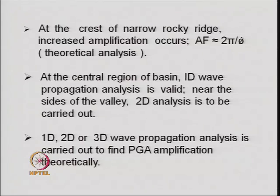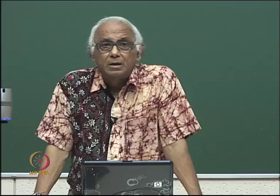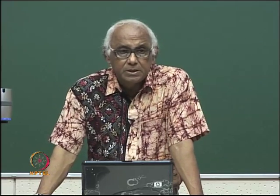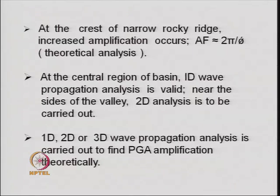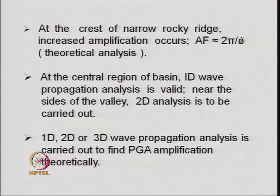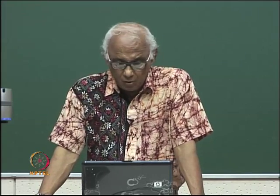At the crest of a narrow rock ridge, increased amplification was observed — of the order of 2π/φ, where φ is the included angle of the ridge. The amplification observations were later verified by wave propagation analysis. Three types of seismic wave analysis can be carried out: one-dimensional, two-dimensional, or three-dimensional. One-dimensional wave propagation analysis is valid at the central region of a basin. Near the sides of a valley, two-dimensional analysis is needed, and under complex situations, three-dimensional wave propagation analysis may be required.